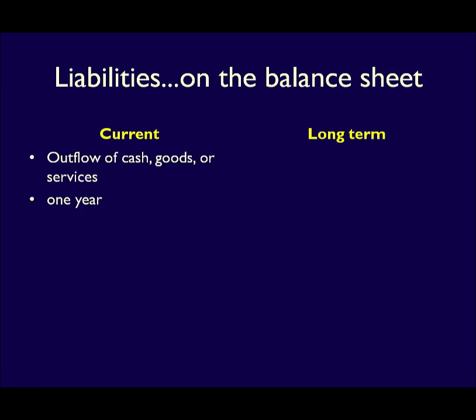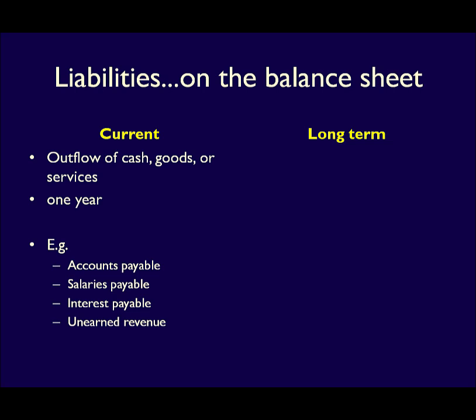Current liabilities are obligations that will be settled within one year from the balance sheet date. They include accounts such as accounts payable, likely settled with an outflow of cash within 45 to 90 days, well within the one-year requirement. Unearned revenue — services due to customers who have paid in advance — are also current liabilities, as these services are likely to be provided quickly within one year.